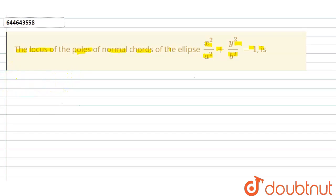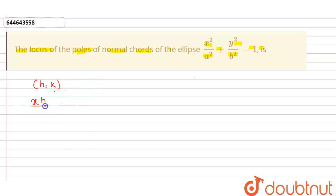Let (h, k) be the pole. So the polar of (h, k) with respect to the ellipse is given by the equation: hx/a² + yk/b² = 1.